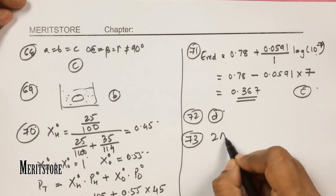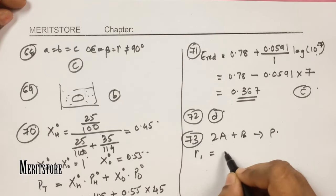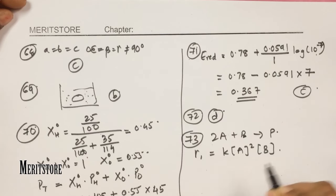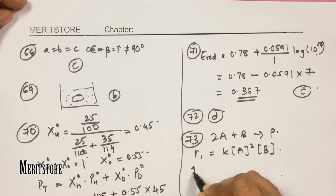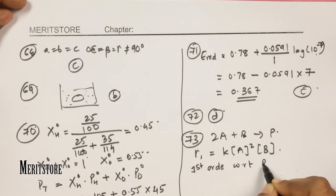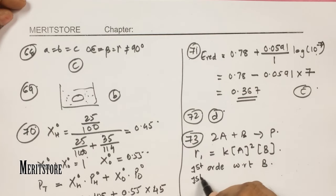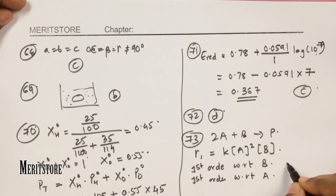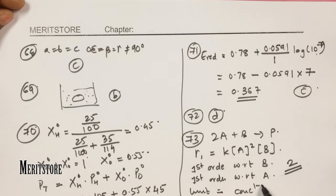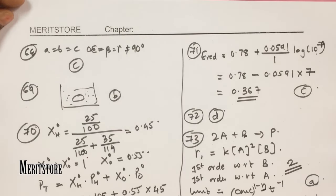Question number 73: for the reaction 2A + B → product, with rate = k[A]²[B]. When B is doubled the half-life does not change, indicating first order with respect to B. When A alone is doubled, the rate also doubles, indicating first order with respect to A. Overall order is 2. The unit of the rate constant for a second-order reaction is L mol⁻¹ s⁻¹. Hence option A.